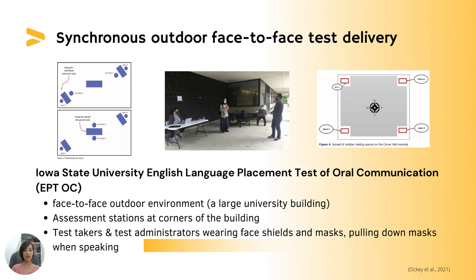At Iowa State University, they have the English Language Placement Test of Oral Communication (EPTOC). Before COVID-19, test takers sat in a test room and moved to the center for conversation. During COVID-19, instead of using an indoor environment, they moved to an outdoor environment, setting up assessment stations at corners of a large university building. Test takers and administrators were required to wear face shields and masks, pulling down the mask when speaking.